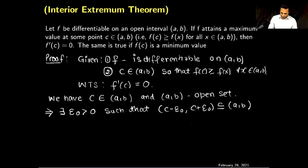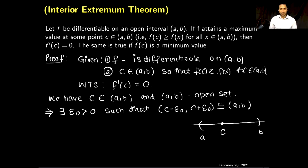Now let me draw this picture. We have the interval (a, b) and there is a point c which belongs to the open interval (a, b). Since (a, b) is an open interval, we can create an open ball around this point, which is (c − ε₀, c + ε₀).